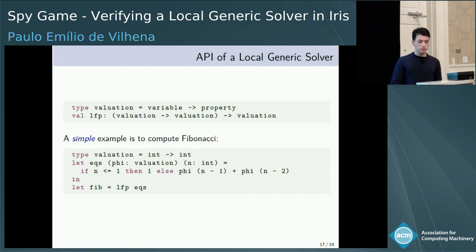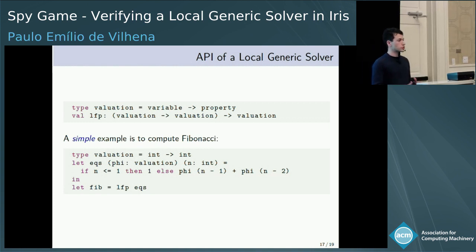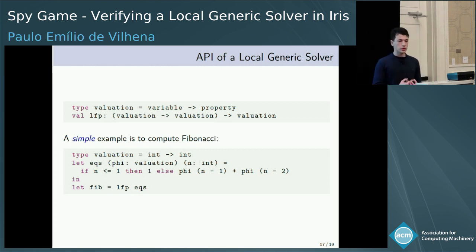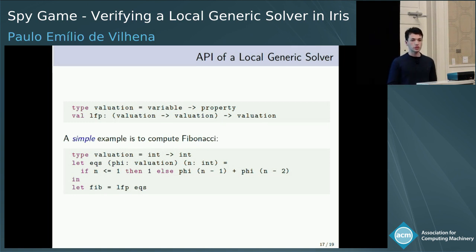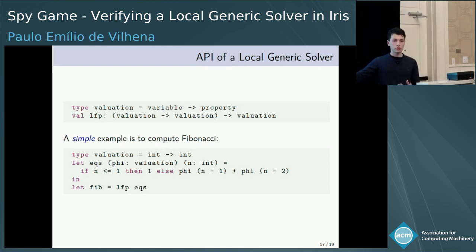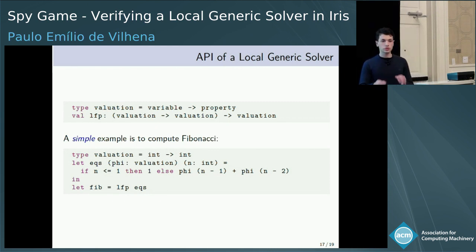A possible signature for a library implementing a local generic solver solves the fixed-point equation on the domain of valuations — functions from variables to properties. A simple example of usage would be to define Fibonacci. It is easy to see that Fibonacci is the solution to the fixed-point equation of EQS on the domain of functions from integer to integer.